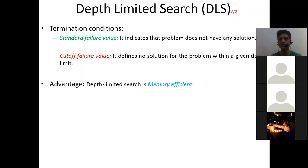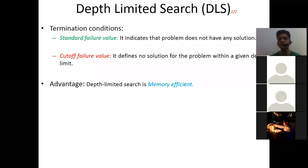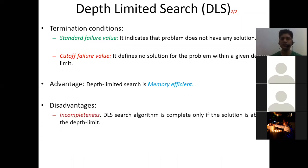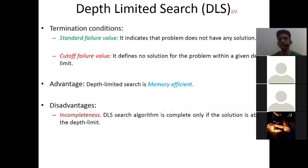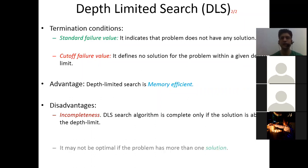The advantage of depth limited search: if we have an infinite kind of depth in a tree, we would have to store all those nodes in memory. But if we put a depth limit — a constraint — that helps save memory. So depth limited search is memory efficient. The disadvantage is incompleteness. The algorithm is complete only if the solution exists above the depth limit. If your solution exists beyond the depth limit, you will never reach it. It may also not be optimal if you have more than one solution — more than one path to reach the solution.